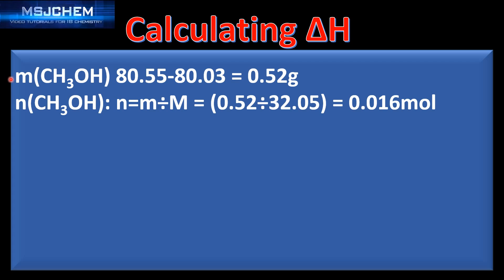We start by calculating the change in mass of the methanol: initial mass minus final mass gives a change of 0.52 grams. Next we calculate the number of moles of methanol using N equals mass divided by molar mass. The mass is 0.52 g and the molar mass of methanol is 32.05 g/mol, giving us 0.016 moles of methanol.